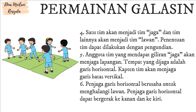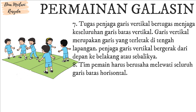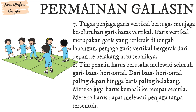Langkah 5: Anggota tim yang mendapat giliran jaga akan menjaga lapangan. Tempat yang dijaga adalah garis horisontal. Kapten tim akan menjaga pada garis batas vertikal. Langkah 6: Penjaga garis horisontal berusaha untuk menghalangi lawan dan dapat bergerak ke kanan dan ke kiri. Langkah 7: Tugas penjaga garis vertikal adalah menjaga keseluruhan garis batas vertikal yang terletak di tengah lapangan, bergerak dari depan ke belakang atau sebaliknya.